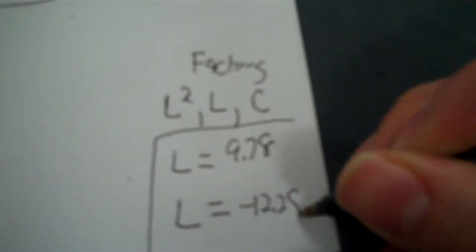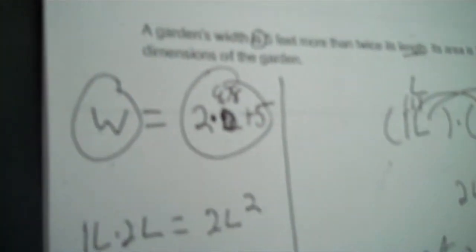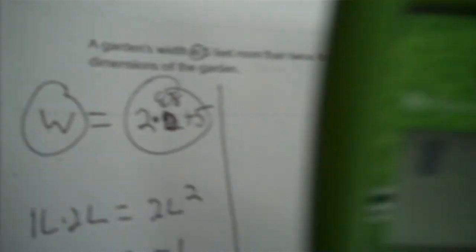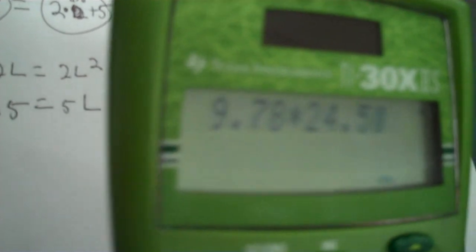Cross out the negative — that doesn't count. Your positive value is the one you want. To find W, you come up to your equation. You have your answer for L, so put 9.78 in: 2 times 9.78 plus 5 equals 24.56. You can always check your answer by multiplying them together and seeing if you're at least close to 240. It's a little off because I rounded — I got irrational decimals — but that's okay.